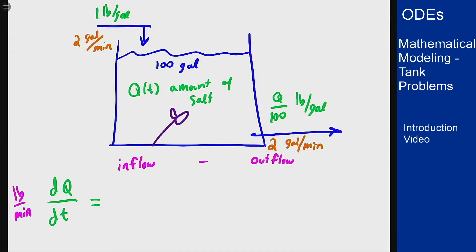So how fast does salt enter the tank? Well it enters via a flow rate of 2 gallons per minute multiplied by a concentration of 1 pound per gallon, which gives 2 pounds per minute of salt entering this tank. For the outflow I have a flow rate of 2 gallons per minute same as before but now my concentration depends on Q and it's Q over 100 pounds per gallon so that gives me an outflow of salt of basically Q over 50 pounds per minute.